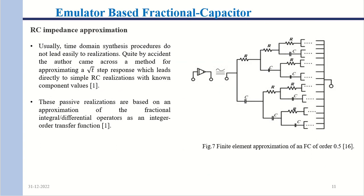As shown in figure 7, one RC impedance approximation represents the fractional capacitor using an infinite ladder, giving a capacitor order of 0.5. Only an infinite ladder can provide a truly constant phase element across all frequency ranges. Using a finite-order approximation limits the constant-phase behavior to a restricted frequency range.